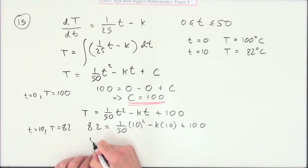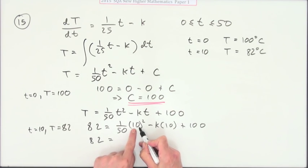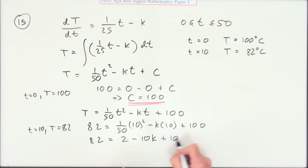It's all numbers apart from that k, so we can find it. 10 squared is 100, 1/50 of 100 is 2, and that's minus 10k and plus 100. So take the 10k over: 10k will be 102 minus 82, which is 20, so k equals 2.